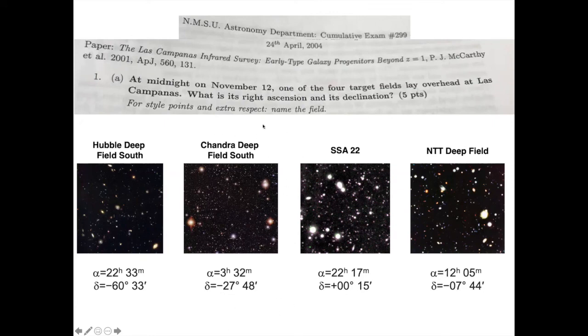Of these four options here, the only one that is close enough to the latitude of the place is Chandra Deep South. Hubble Deep Field South would be declination minus 60, would be overhead if you were in Antarctica. These two here would be if you're close to the equator. Therefore we are left with the Chandra Deep Field South as the correct answer.